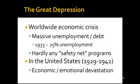Imagine if a quarter of people were out of work today. But the problem with the Great Depression was that at the time, there were no safety net programs — no unemployment insurance, no social security, no food stamps. There was nothing to provide for people when they fell on hard times. And so in the United States, from about 1929 all the way up to 1942 at the start of the Second World War, there was economic and emotional devastation throughout all of the United States.